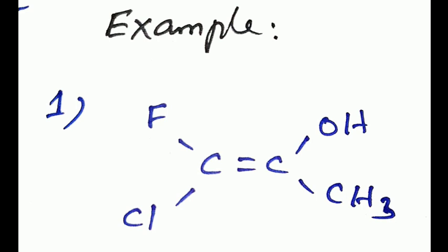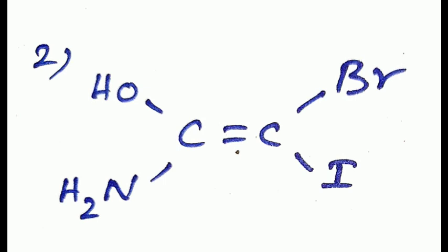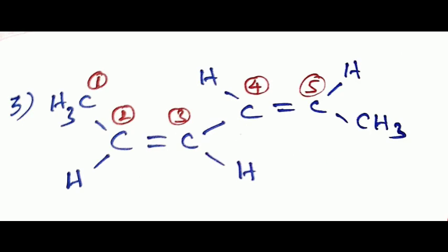First compound: first carbon, Cl has more atomic number so it is designated number one, CF3 has low priority number two. Second carbon, oxygen is high priority number one, and CH3 is low priority. Therefore the same numbers are on opposite sides, so it is the E isomer. Second compound: first carbon, oxygen has high priority and CNH2 group has low priority. The second carbon has high priority Br and low priority Br. Therefore the second compound is also E isomer.